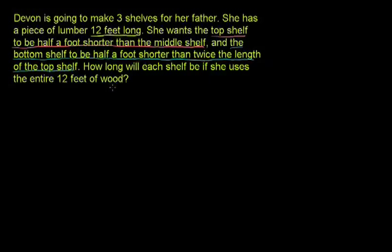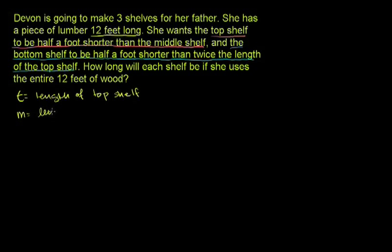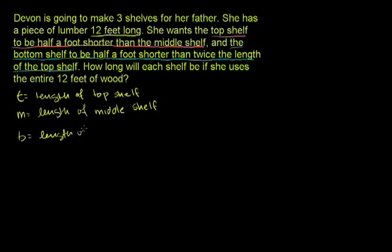Let's define some variables for our different shelves, because that's what we have to figure out. We have the top shelf, the middle shelf, and the bottom shelf. So let's say T is equal to the length of the top shelf, M is equal to the length of the middle shelf, and B is equal to the length of the bottom shelf.